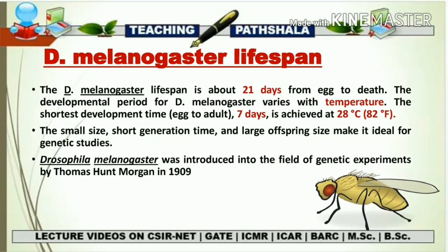The main qualities of a model organism are that it should be small in size, have a short generation time and short lifespan so researchers can test genes and get results quickly. They should also produce a large number of offspring in a short duration for further testing. Drosophila melanogaster was first introduced into the field of genetics experiments by Thomas Hunt Morgan.